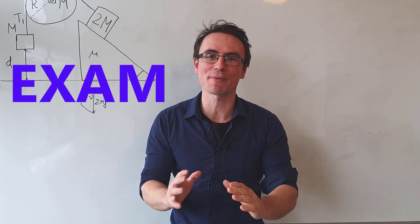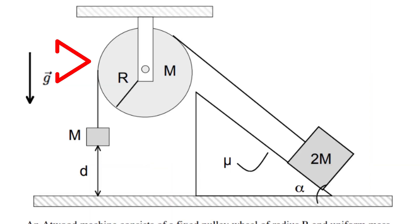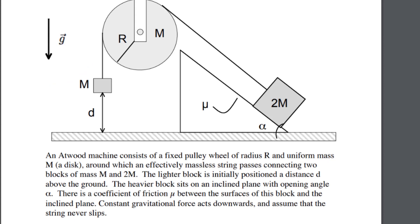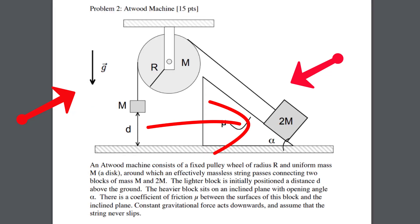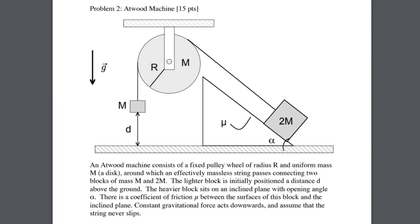Let's solve an MIT final exam physics problem. We have an Atwood machine that consists of a fixed pulley wheel of radius R and uniform mass M. We also have a massless string connecting two blocks of mass M and 2M. The lighter block is initially positioned a distance D above the ground and the heavier block is positioned on an inclined plane with opening angle alpha. There is a coefficient of friction mu between the surfaces of the block and the inclined plane, and the string never slips.